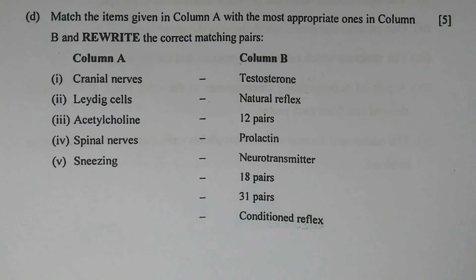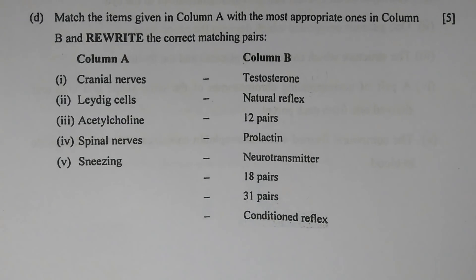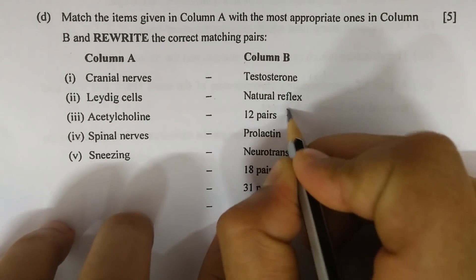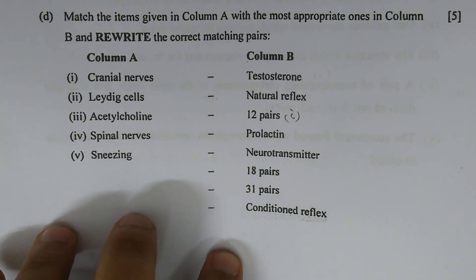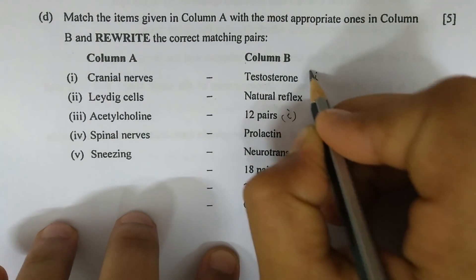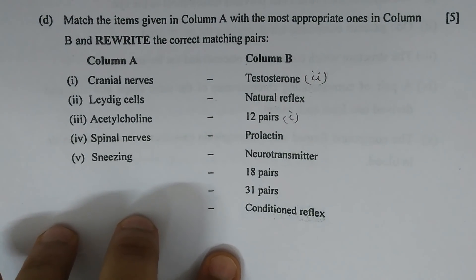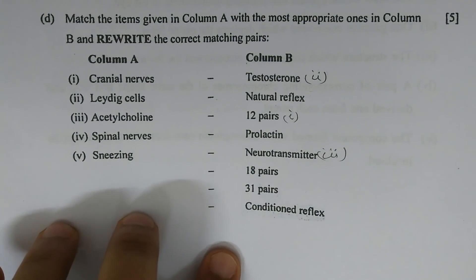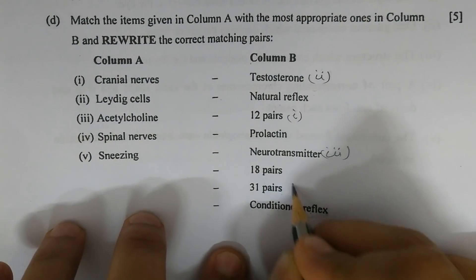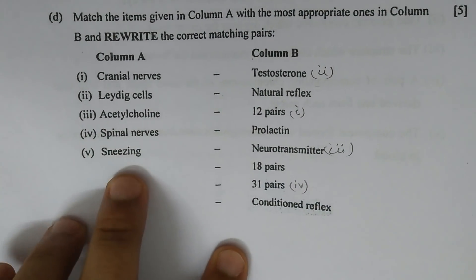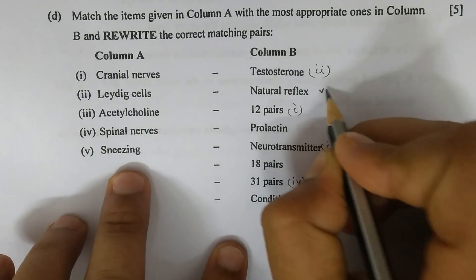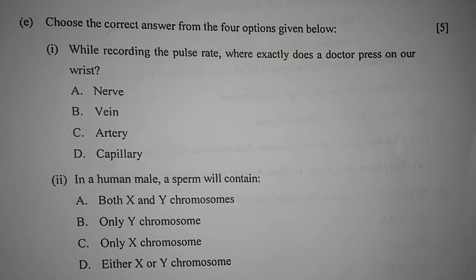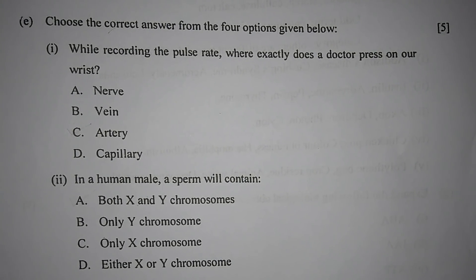Question 1d: Match the items in Column A with the most appropriate ones in Column B. Number 1 — cranial nerves: 12 pairs. Number 2 — Leydig cells: testosterone. Number 3 — acetylcholine: neurotransmitter. Number 4 — spinal nerves: 31 pairs. Number 5 — sneezing: natural reflex.